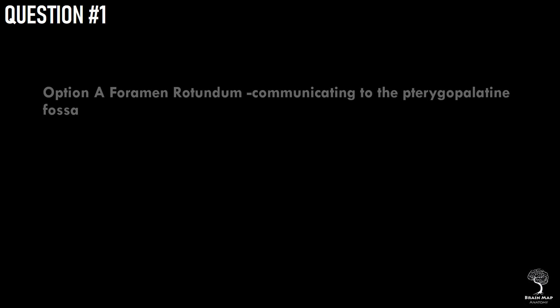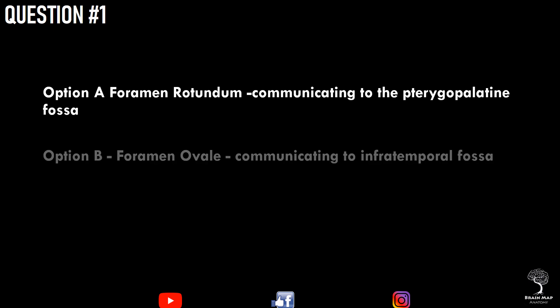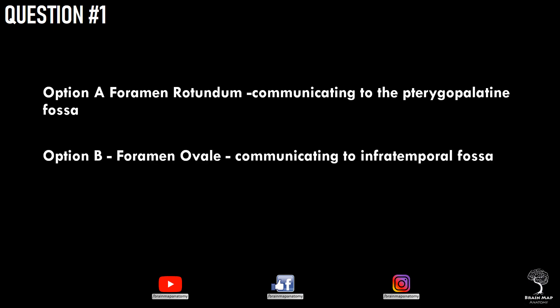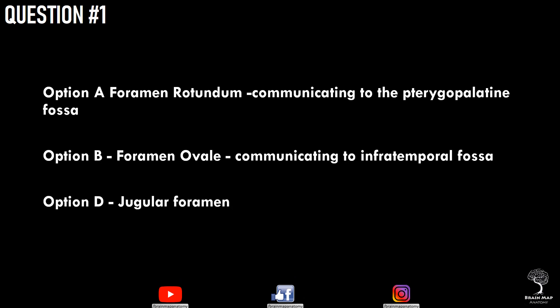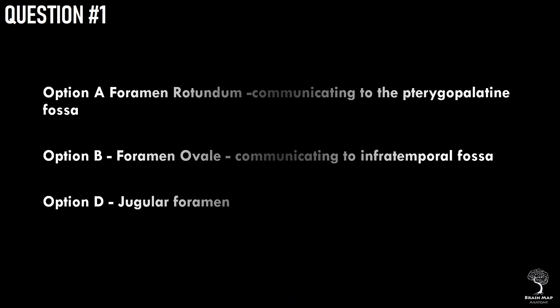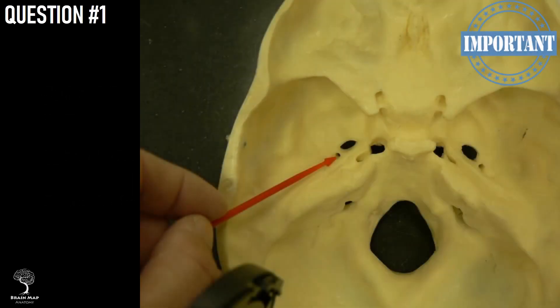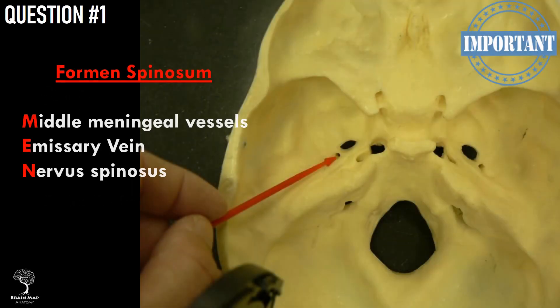Option A is foramen rotundum, communicating to the pterygopalatine fossa. Option B is foramen ovale, communicating to the infratemporal fossa. Option D is present in the posterior cranial fossa and is called the jugular foramen. Take home message: foramen spinosum is present in the sphenoid bone and communicates between the middle cranial fossa and infratemporal fossa. Structures passing through the foramen are middle meningeal vessels, emissary vein, and nervus spinosus.